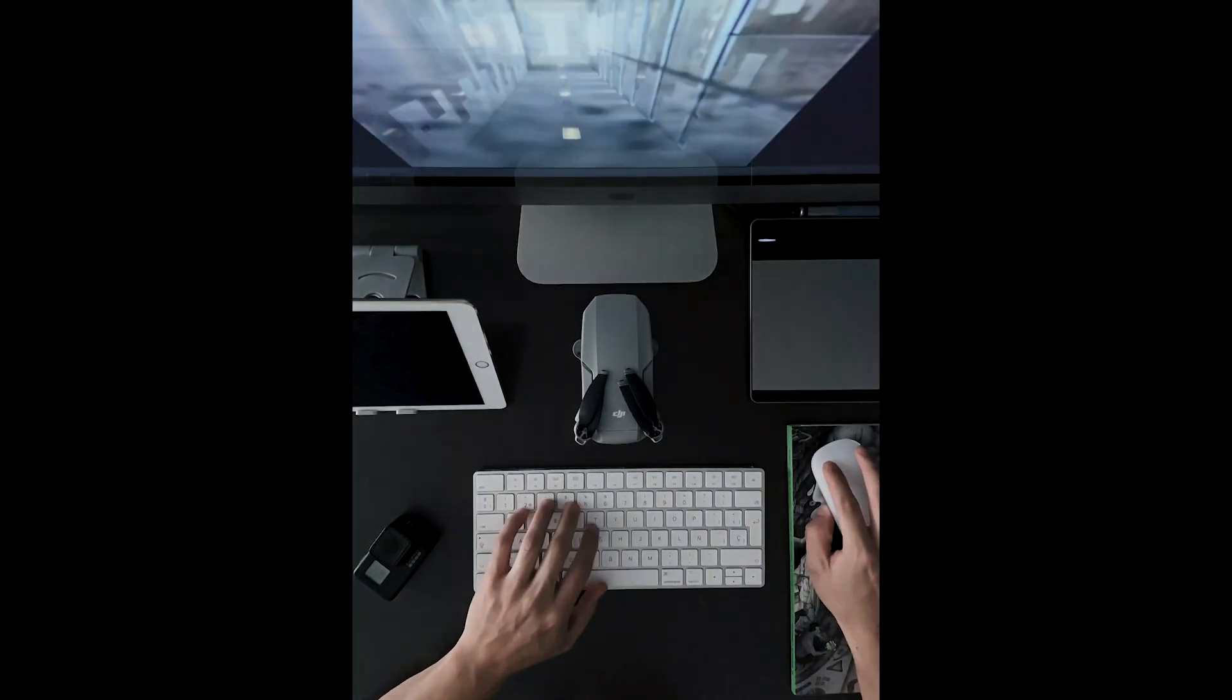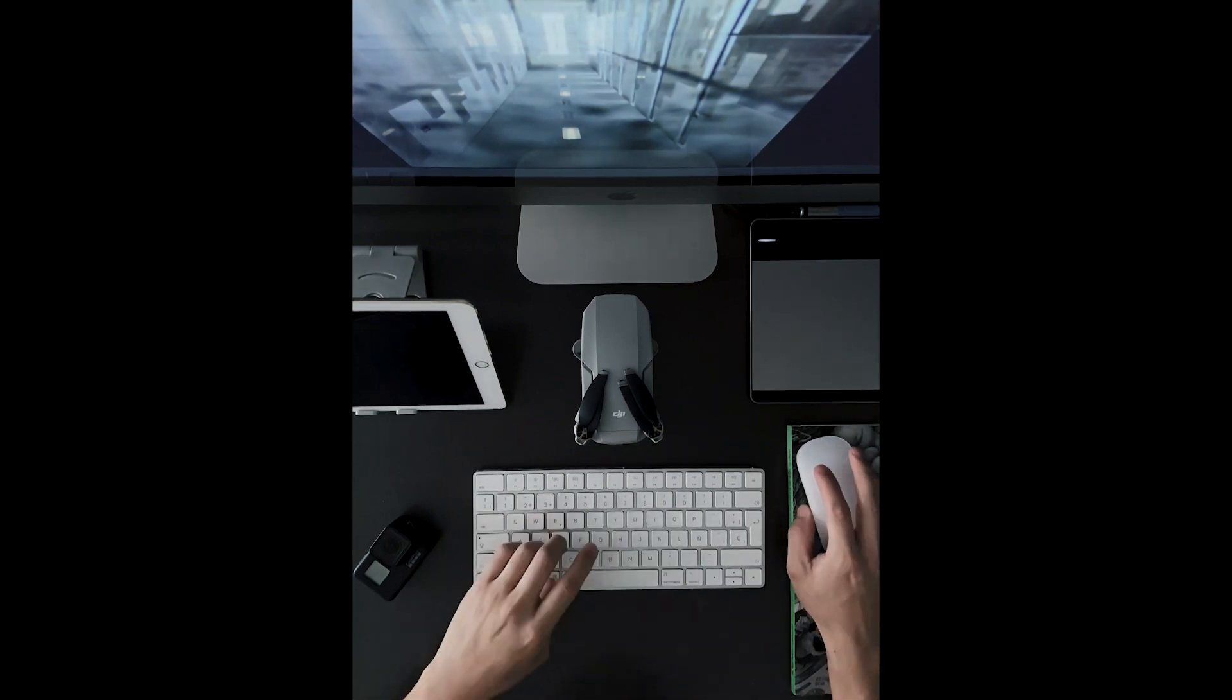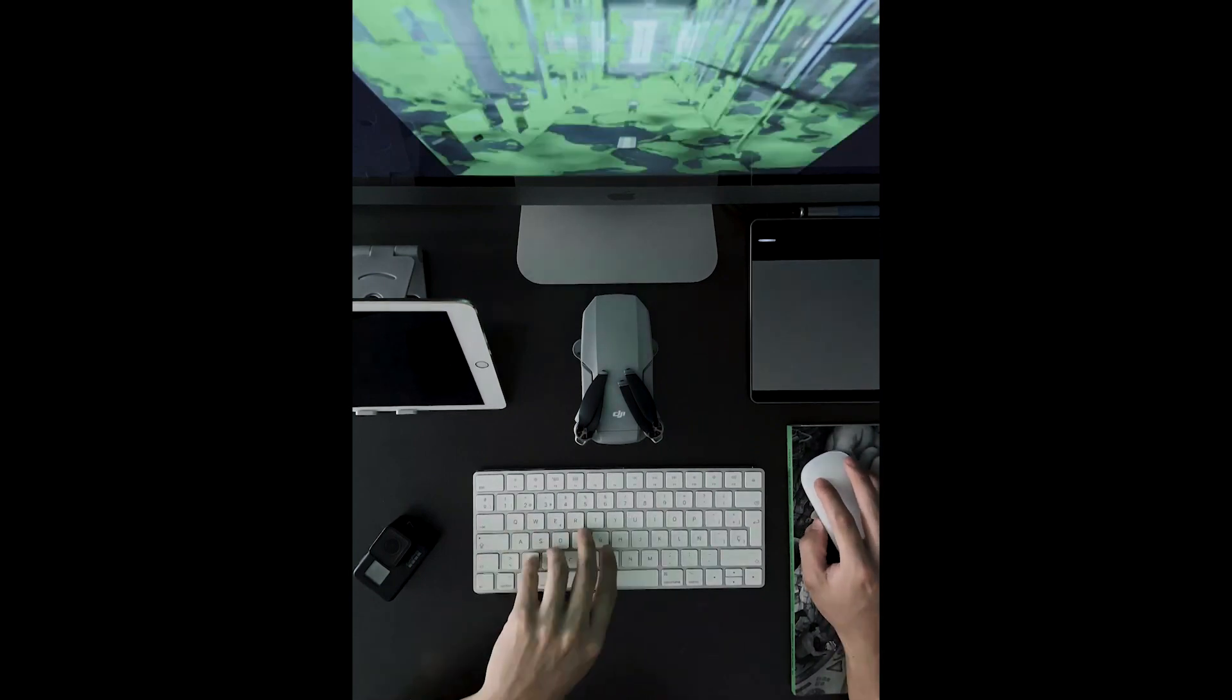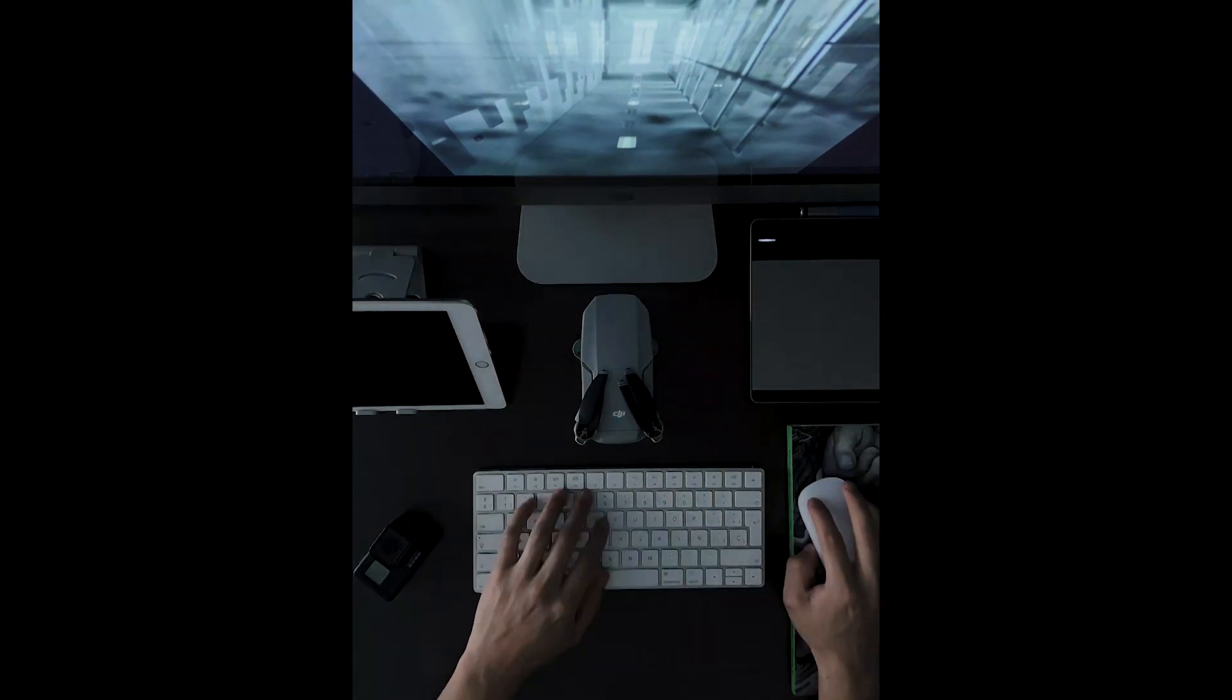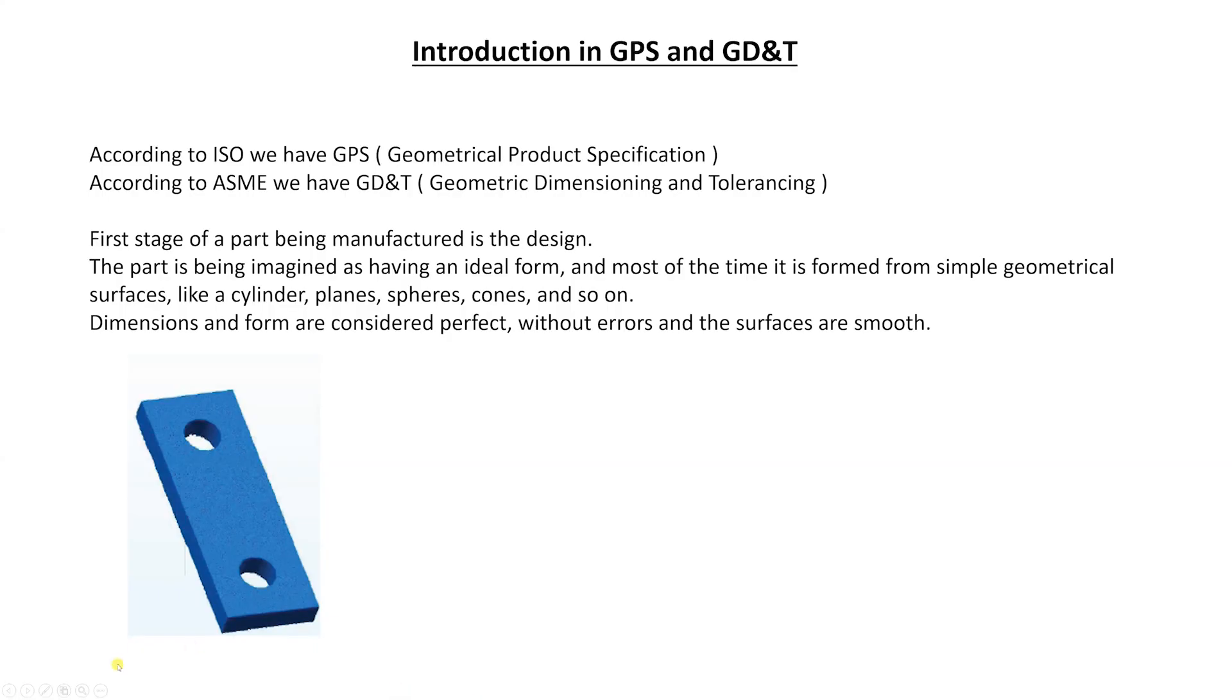The first step of a part being manufactured is the design. The part is being imagined as having an ideal form and most of the time is formed from simple geometrical surfaces like sphere, planes, cylinders, cones and so on. Dimensions and form are constructed perfect without errors and the surfaces are smooth, exactly like we can see here in this image.